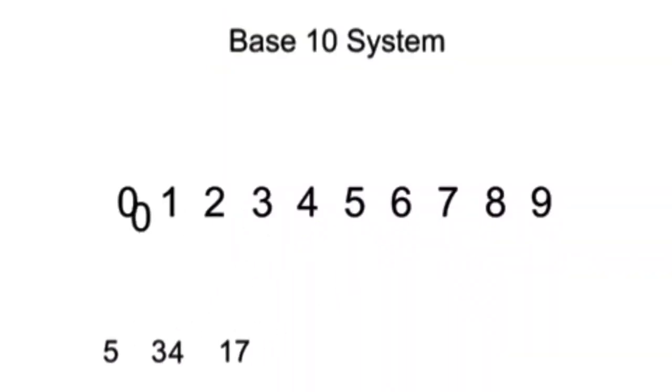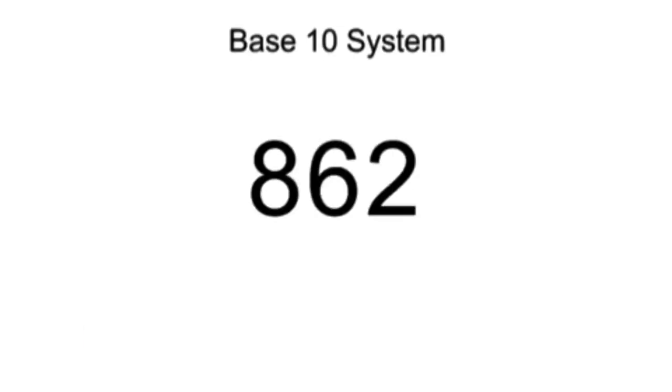We use this system to write numbers and perform mathematical operations. The position of a digit in the base 10 system determines its magnitude. This is referred to as place value. Moving from right to left, we multiply each preceding digit position by 10.